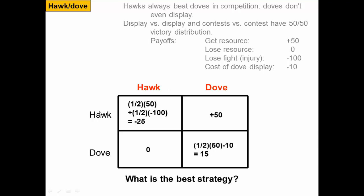If a hawk meets a hawk, they have a 50% chance of winning the resource but also a 50% chance of losing and paying the penalty for losing a fight, giving an expected payoff of negative 25. If a hawk meets a dove, they automatically get the resource — payoff 50. If a dove meets a hawk, the dove detects the hawk and gives up, resulting in zero. If a dove meets a dove, there's a 50% chance of winning the resource minus the cost of displaying, giving an expected payoff of 15.